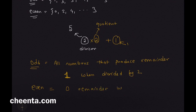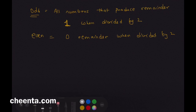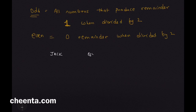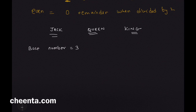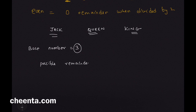Even numbers, on the other hand, produce remainder 0 when divided by 2. I'm doing this rigorously because I want to define something called jack, queen, and king numbers. To do that, we choose the base number as 3. We will divide the non-negative numbers by 3 and check the remainders. The possible remainders are 0, 1, and 2.